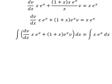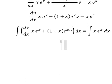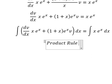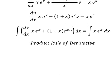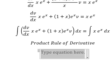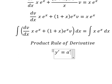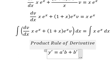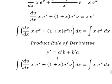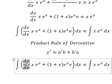So we can use the product rule for the derivative. The first derivative of the product equals the first derivative of the first function multiplied by the second, plus the first derivative of the second multiplied by the first.